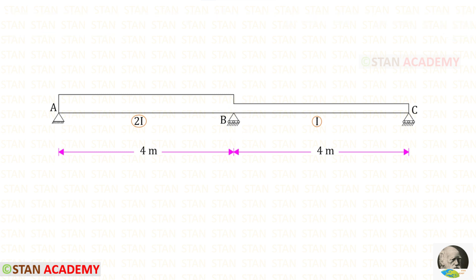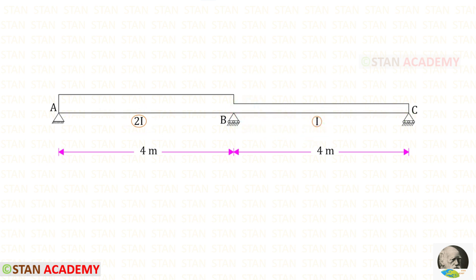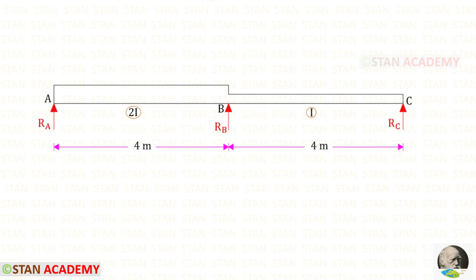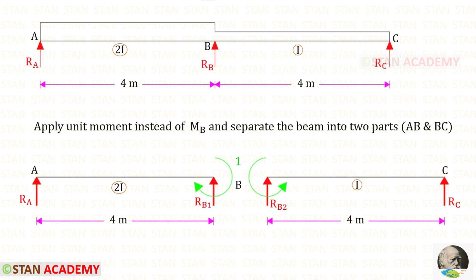This is a non-prismatic beam, which means there are different sections. For span AB, the moment of inertia is 2I, and for BC it is I. At point A there is a hinged support, and at points B and C there are roller supports. So at points A, B, and C we will have vertical supports to draw the influence lines for MB.